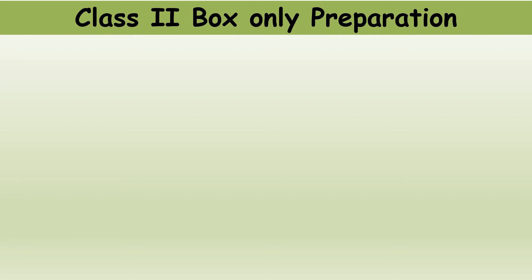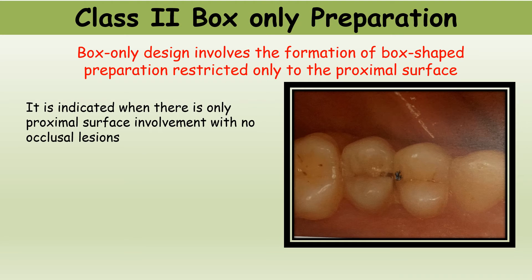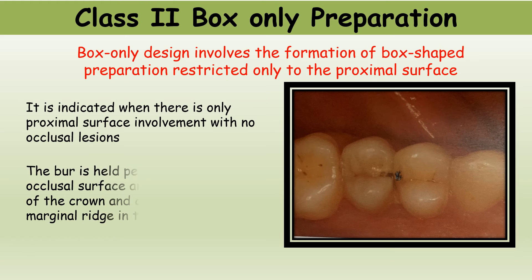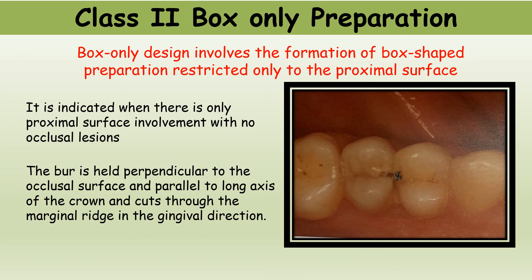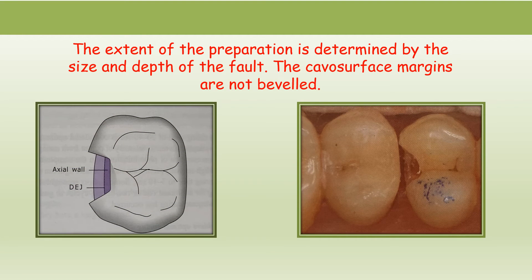The third design is class 2 box only preparation. This involves formation of a box-shaped preparation restricted only to the proximal surface. It is indicated when there is only proximal surface involvement with no occlusal lesions. The burr is held perpendicular to the occlusal surface and parallel to the long axis of the crown, cutting through the marginal ridge in the gingival direction. The extent is determined by the size and depth of the fault, and the cavosurface margins are not beveled.